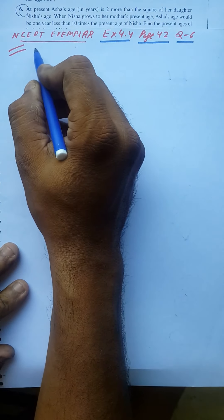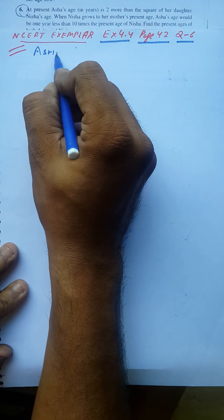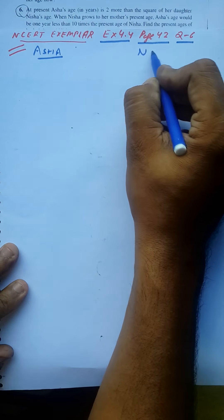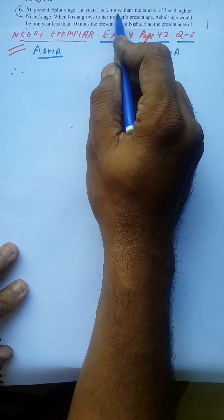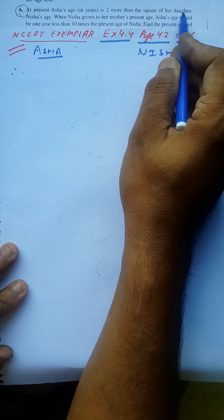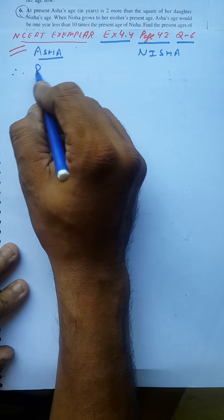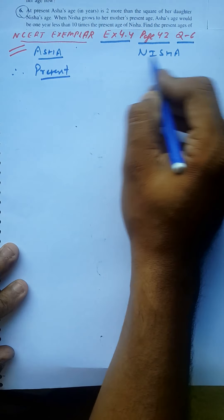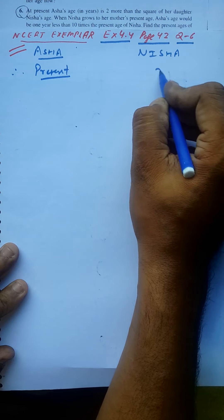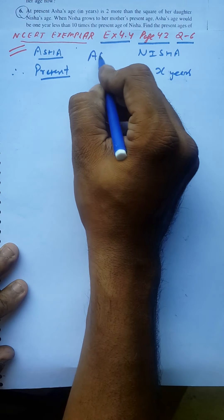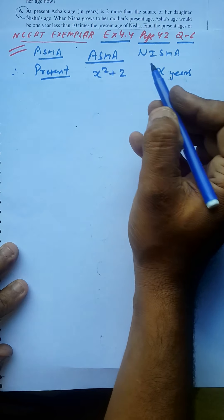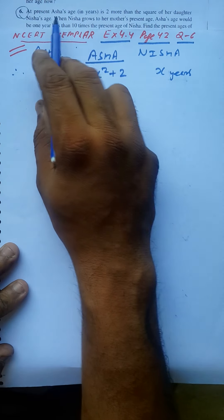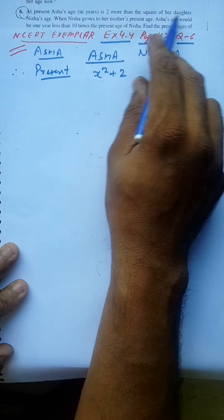Here we have a question. A madam named Asha has a daughter named Nisha. At present, Asha's age in years is 2 more than the square of her daughter Nisha's age.